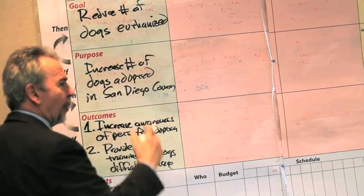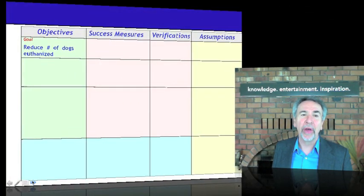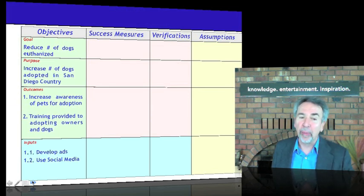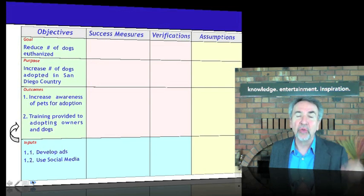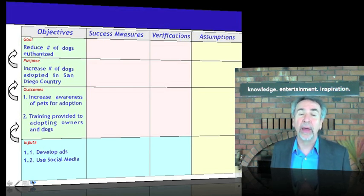We've established a hierarchy of objectives. The group came up with a hierarchy of objectives of the form if-then. Basically it says: if we do certain tasks, which we call inputs, we can provide these outcomes — increased adoption and training. If this will accomplish a purpose, increase the number of dogs adopted, and contribute to the goal of reducing the number that's euthanized.